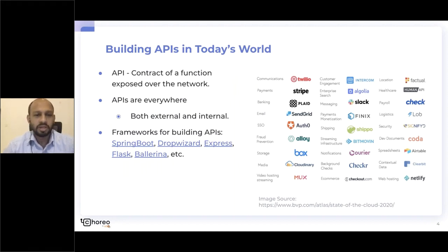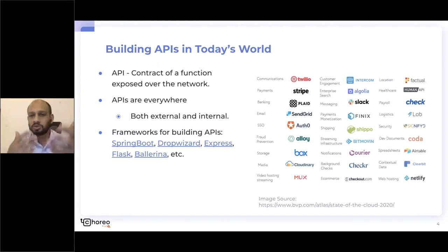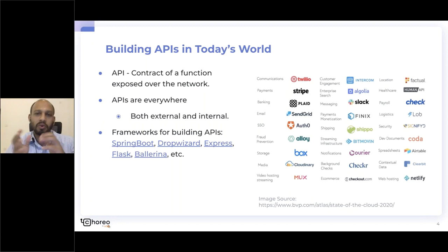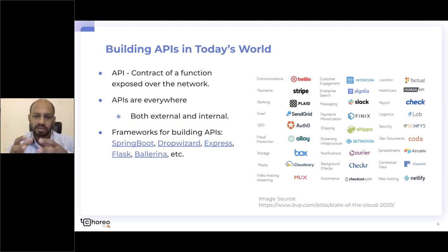An API is a contract — a function that is usually exposed over the network. The beauty of the world we're living in today is that APIs are everywhere, and I love it. It enables so many possibilities and makes life much easier for businesses to focus on innovating.